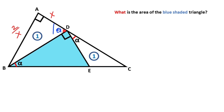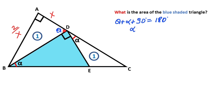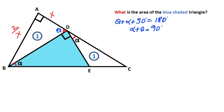We know that a straight angle equals 180 degrees, so theta plus alpha plus 90 degrees equals 180 degrees. That means alpha plus theta equals 90 degrees. So if you focus on this triangle, if here is theta, then this angle must be equal to alpha. Therefore we get an angle bisector.